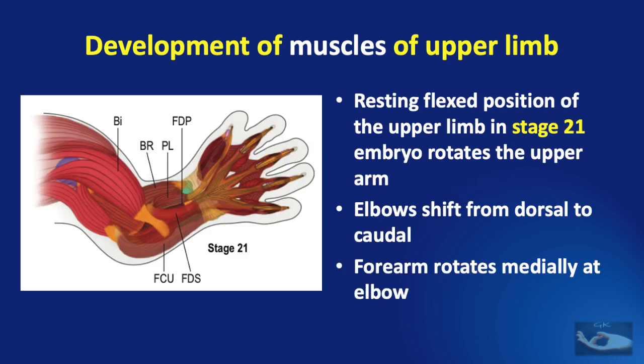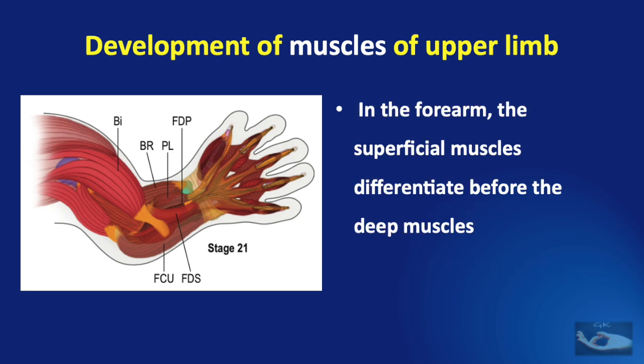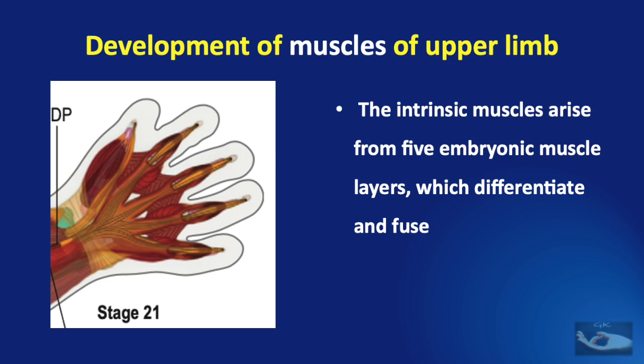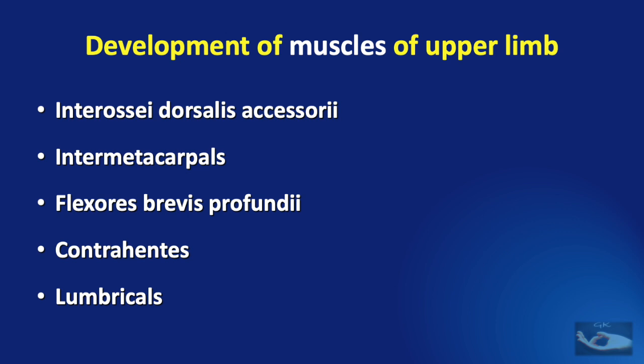With the development of the muscle mass, the resting flexed position of the upper limb is seen at stage 21 and this rotates the upper arm. The elbows shift from dorsal to caudal and the forearm rotates medially at the elbow. In the forearm, the superficial muscles differentiate before the deep muscles. As far as the hand is concerned, the intrinsic muscles arise from five embryonic muscle layers which differentiate and fuse: the interossei dorsalis accessoriae, the intermetacarpals, the flexors brevis profundiae, the contrahentis, and the lumbricals, which later form the different intrinsic muscles of the hand.